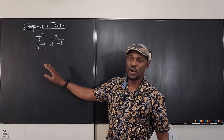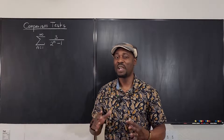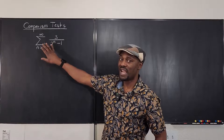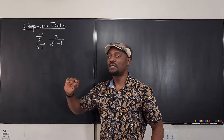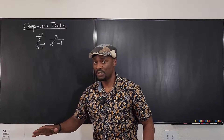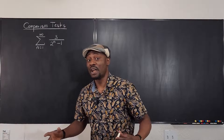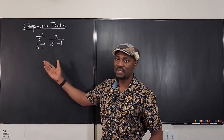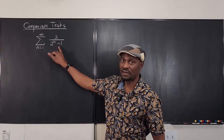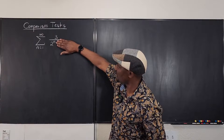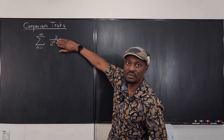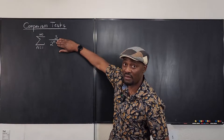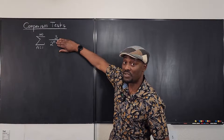So you have a series here and you just want to know if it's going to converge to a finite number. Remember, you're doing the comparison test because the divergence test did not help you — you don't know if it's going to diverge or converge. It is not a geometric series because of this minus one sitting here. If the minus one was not there, this is clearly a geometric series.